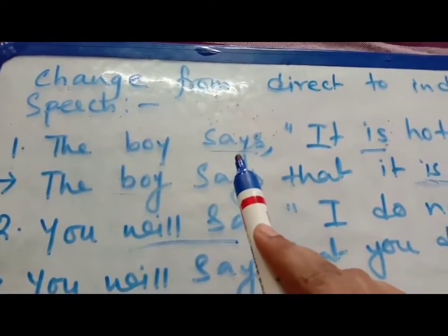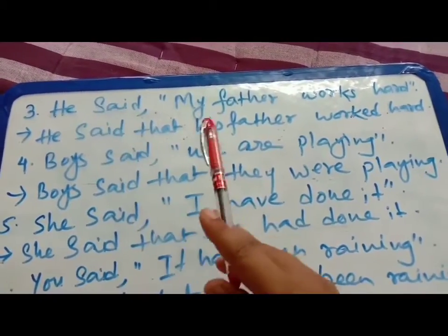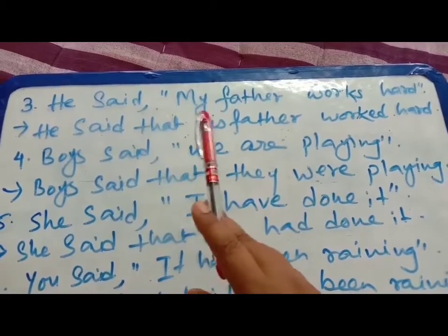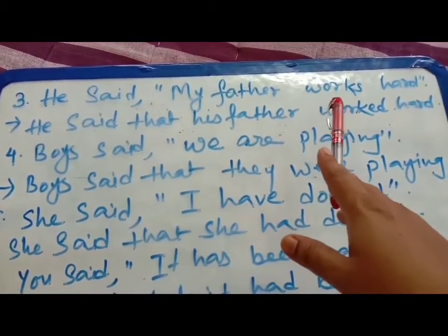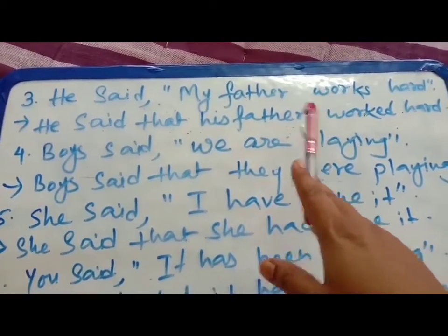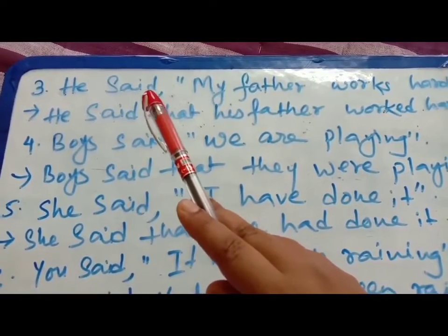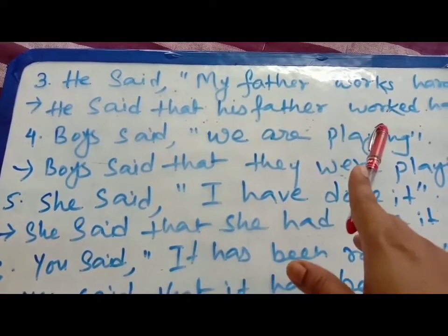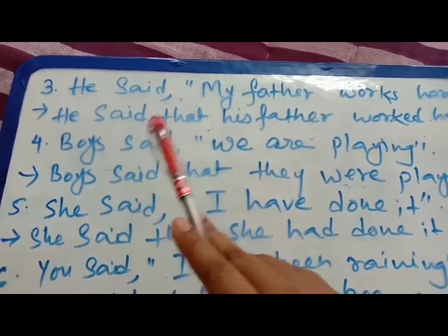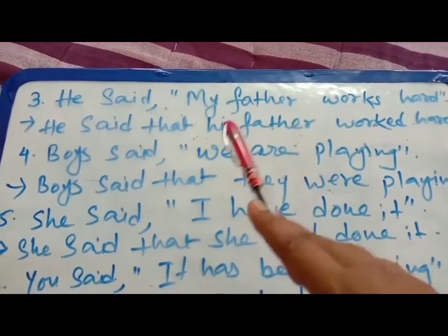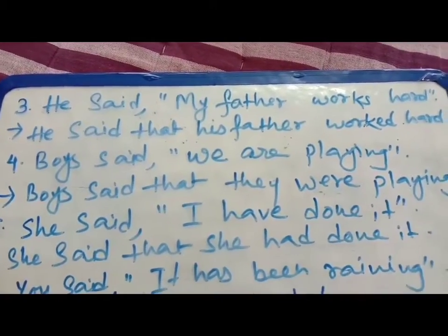Otherwise, according to the reporting verb, the reported verb will also be changed. Number three: He said, my father works hard. Said is the reporting verb and works is the reported verb. Said is simple past tense and works is simple present tense. According to the rule, the reported verb must be changed. Since the reporting verb is simple past, you have to change the reported verb also to simple past form. So: he said that his father worked hard.